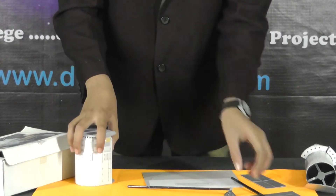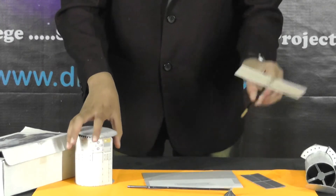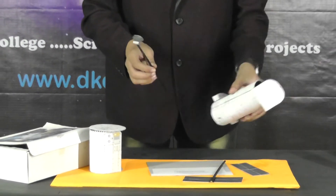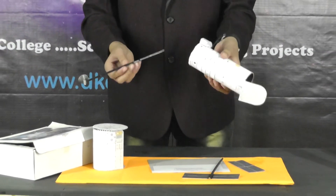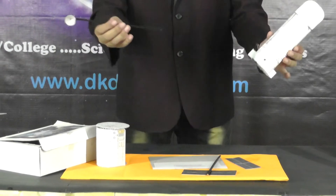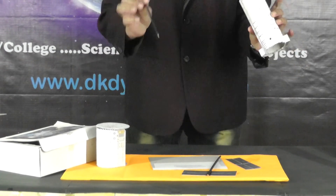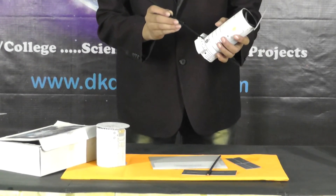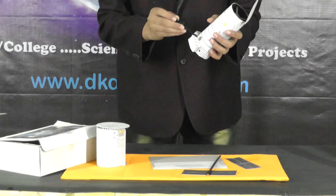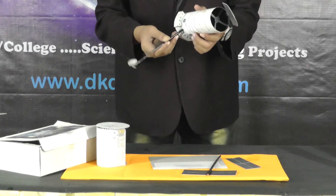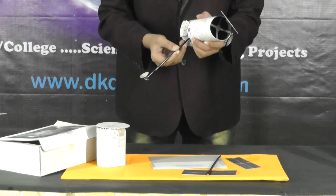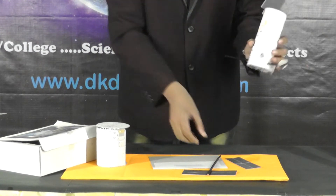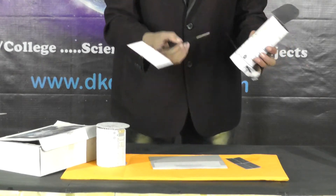Here we are having the solar panels as well as the antennas for fixing into the forward shield. We have to just insert this antenna through the holes, and we have to fix these solar panels.